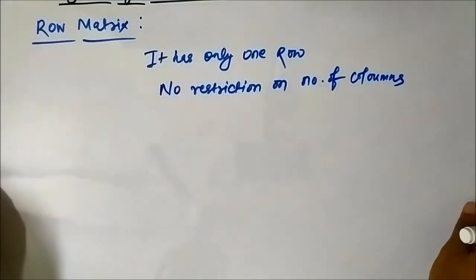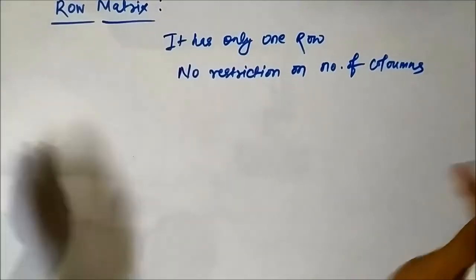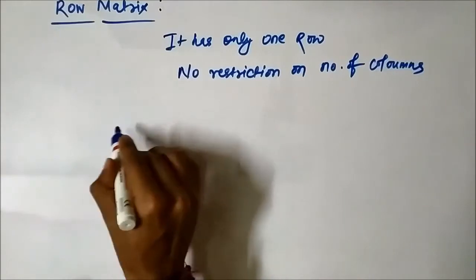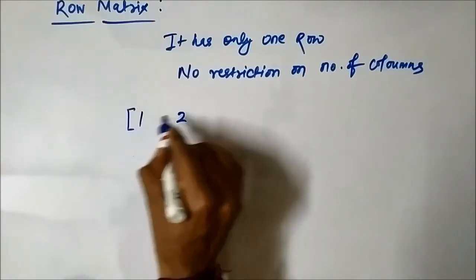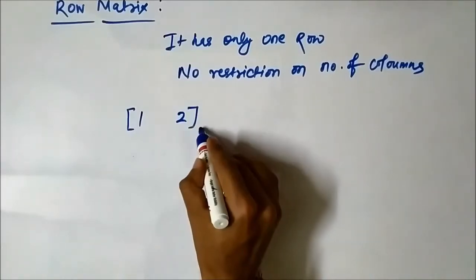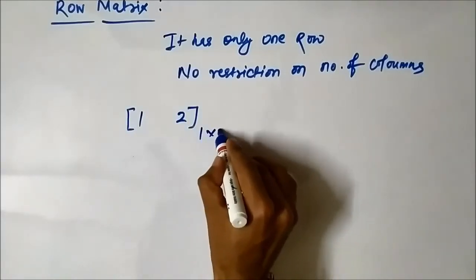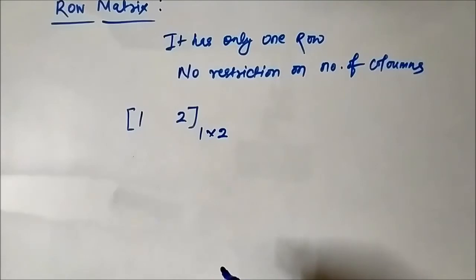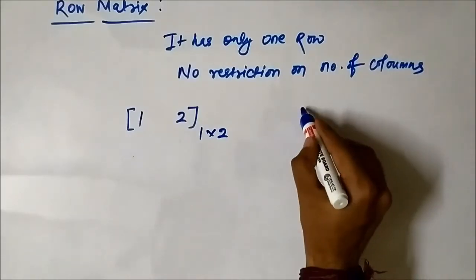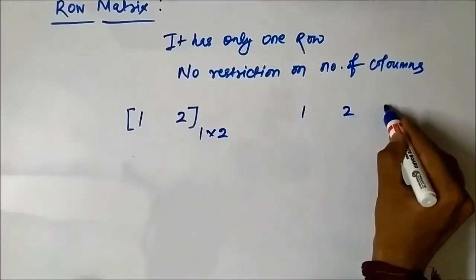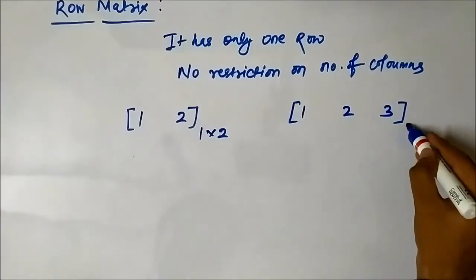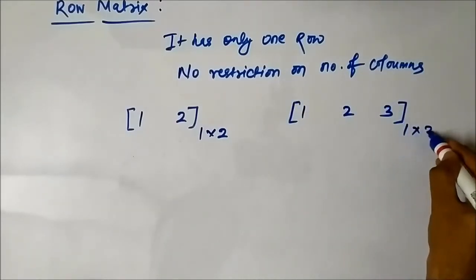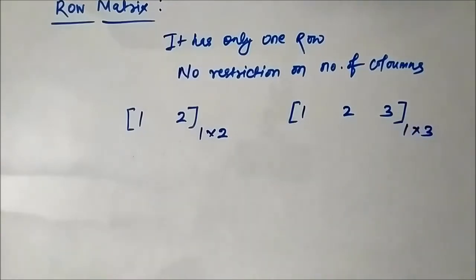An example of this row matrix is [1, 2]. It has 1 row and 2 columns. Another example is [1, 2, 3]. It has 1 row and 3 columns. There is no restriction on the number of columns.